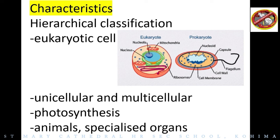Some organisms produce their own food through the process of photosynthesis — for example, plants. Animals have specialized organs for different functions. These are some of the key characters used in hierarchical classification.